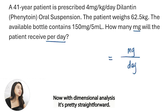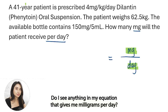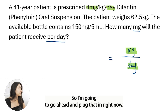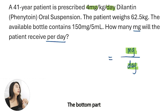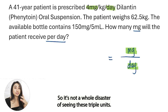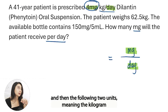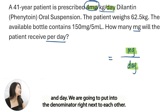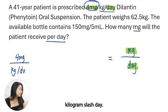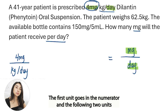With dimensional analysis, it's pretty straightforward — plug in whatever you're trying to solve for. We're trying to solve for milligrams per day. Do I see anything in the equation that gives me milligrams per day? I do. I see immediately four milligrams and it has day. So I'm going to go ahead and plug that in. When working with these triple units, here's a hint to simplify things: the first unit — meaning the four milligrams — goes into the numerator, and then the following two units — kilogram and day — go into the denominator right next to each other. So I'm going to write four milligrams over kilogram slash day. That is how you write a triple unit as a fraction. The first unit goes in the numerator and the following two units go into the denominator.